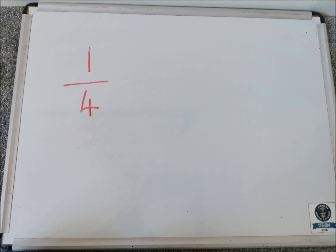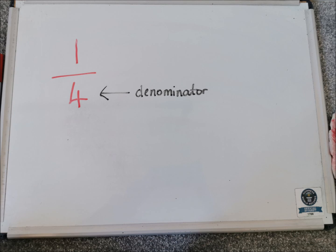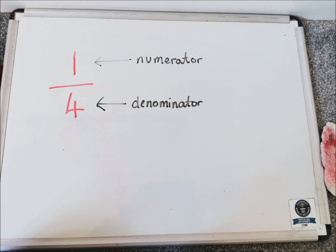So let's have a look first of all at this fraction. Hopefully we know straight away what that fraction is and we can begin to think about what are the different parts of this fraction. So this fraction is a quarter, and the number on the bottom is the denominator and the number on the top is the numerator. The denominator tells us how many pieces something is divided up into, and the numerator tells us just the number of those pieces. So hopefully we are quite good at that by now.